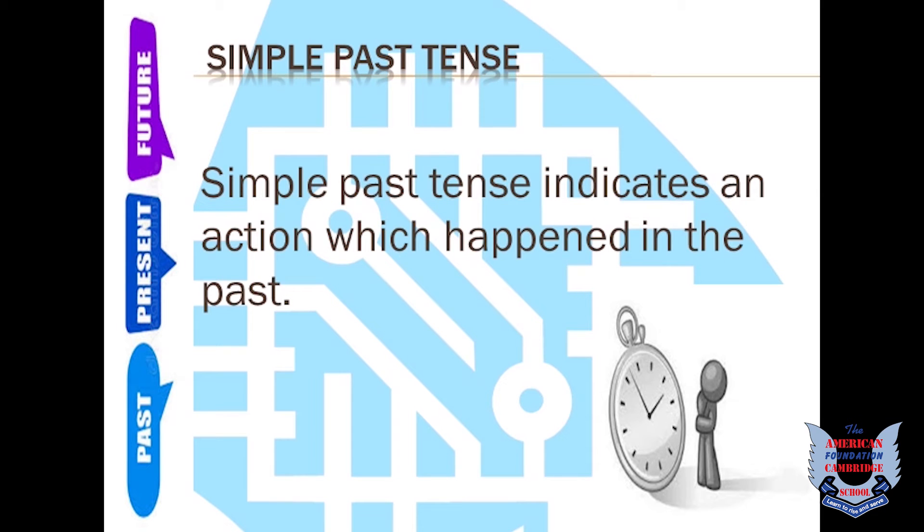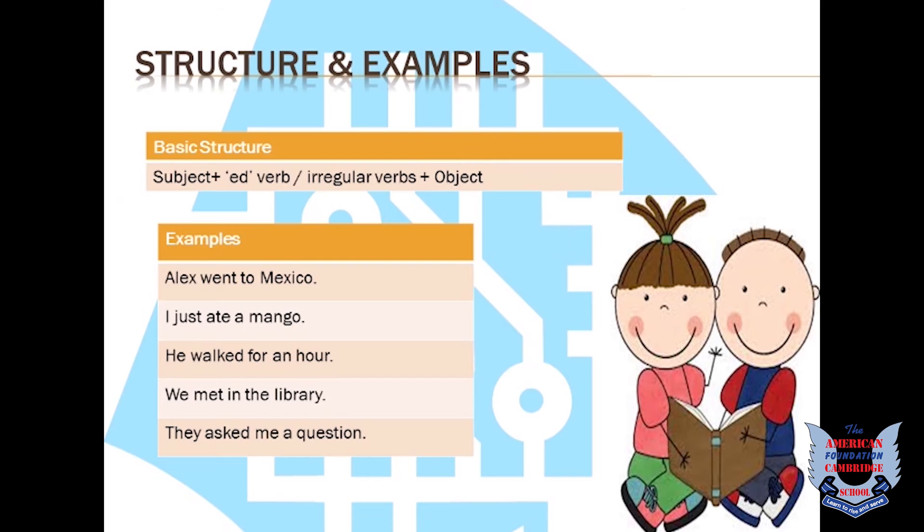The simple past tense indicates an action which happened in the past. The structure of a simple past tense includes a subject with the ed form of verb or the irregular verbs.